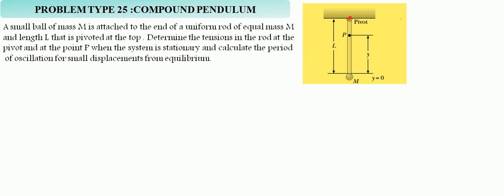At this top point, what are the forces acting? Since the small ball has mass M and the rod also has mass M, at the pivot there is mg due to the ball and mg due to the rod. So the force at the pivot, which equals the tension, is 2mg.